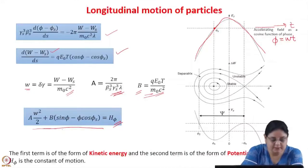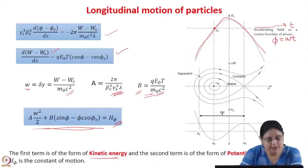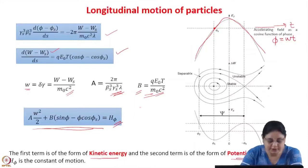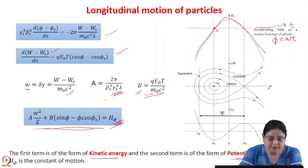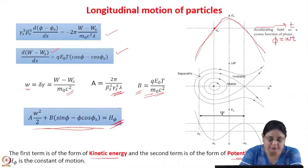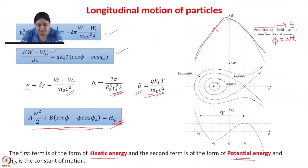Looking at this expression, the first term is of the form of kinetic energy and the second term is of the form of potential energy, and h(phi) is the constant of motion. If you plot this in the longitudinal phase space, it gives the trajectory of the particle depending upon the value of h(phi). This potential energy function can be evaluated.